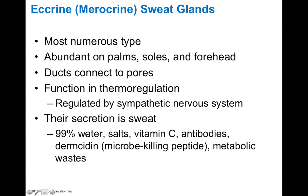The secretion of sweat is mostly water, followed by salts, some vitamin C, antibodies — which is an immune element — dermocidin, which is a microbe-killing peptide, as well as other metabolic wastes. Some wastes are also incorporated into sweat, and in conditions like renal failure where the kidneys can't get rid of wastes, the sweat glands end up secreting a lot of these wastes, resulting in something called uremic frost — essentially a salty coating of the skin due to accumulation of wastes excreted in sweat rather than urine.